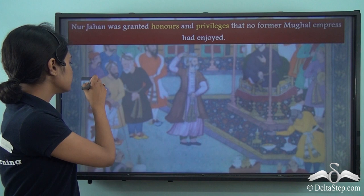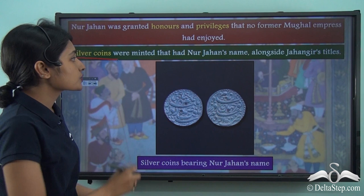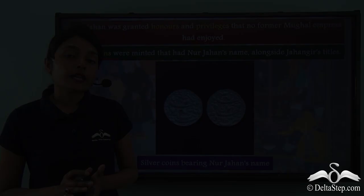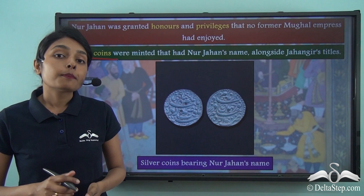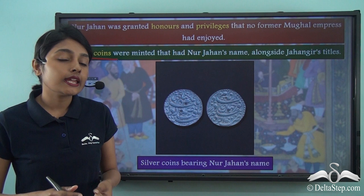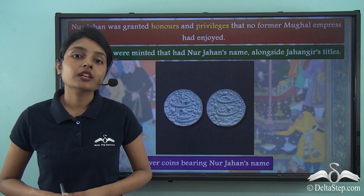Silver coins were minted during this time with Nur Jahan's name alongside the Mughal Emperor Jahangir's name — a remarkable thing in medieval times when women had virtually no role in the political affairs of the state. Nur Jahan Begum had her name minted on silver coins alongside the emperor's name. She was a very beloved wife of Mughal Emperor Jahangir.